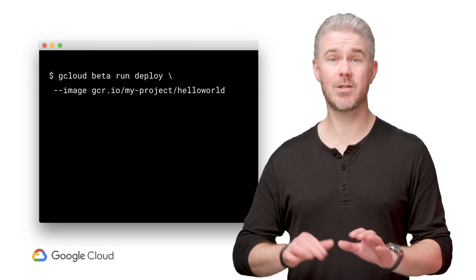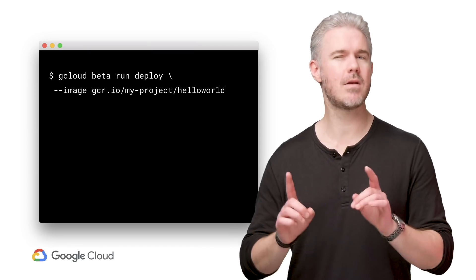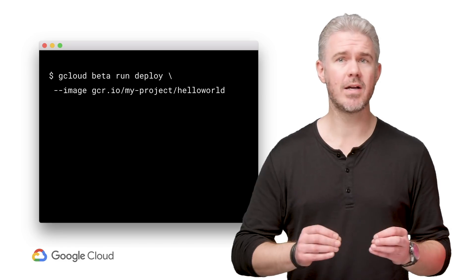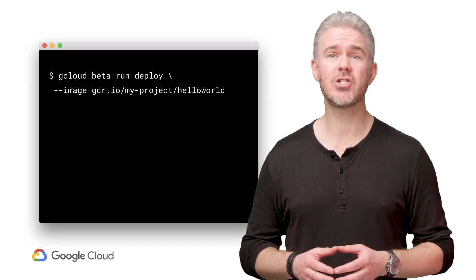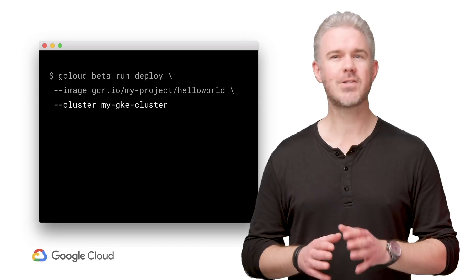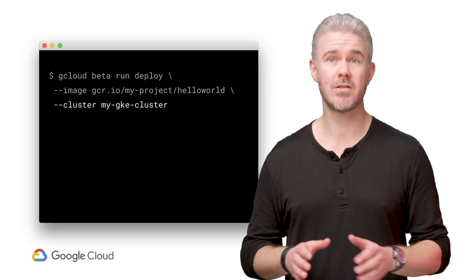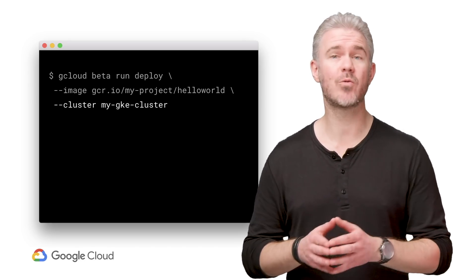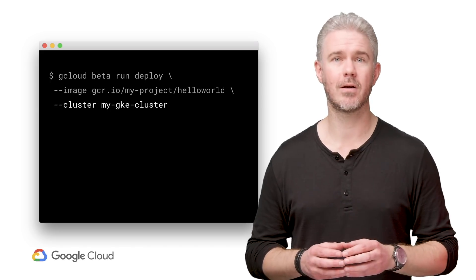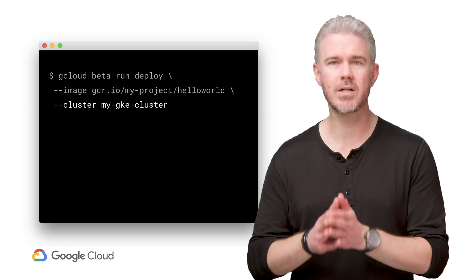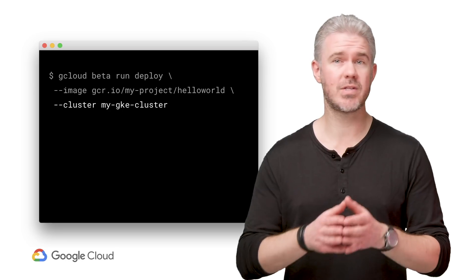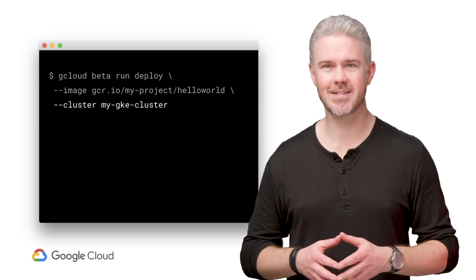Here's the command to deploy an app to Cloud Run that is not running on GKE: gcloud run deploy, and give it the location of the container you want to deploy. It's almost exactly the same command to deploy to Cloud Run on GKE with just one additional parameter — the name of the cluster you want to deploy your app into. It's easy, whether you're using the command line or the user interface.